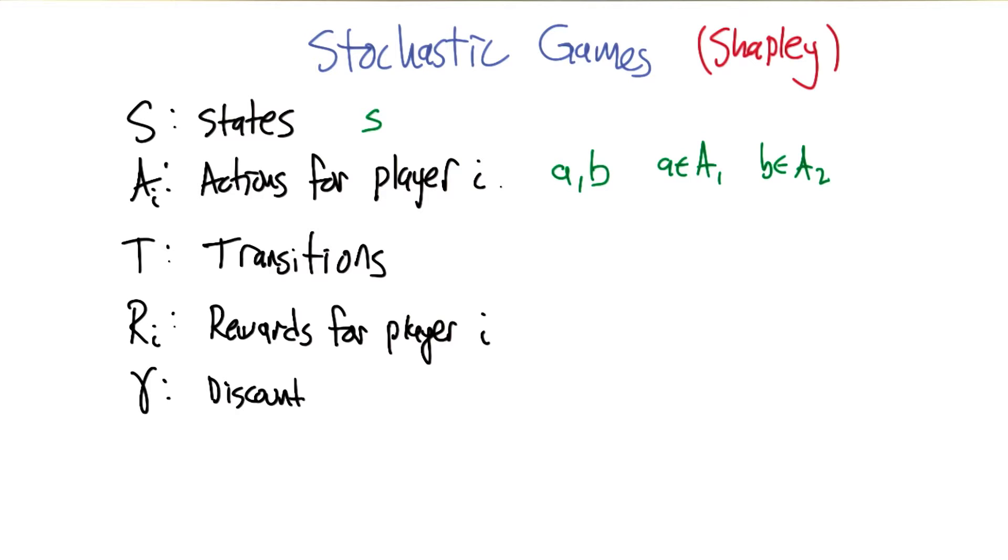So stochastic games, originally due to Shapley, have a bunch of different quantities: states, actions, transitions, rewards, and discount factors. And here's how we're going to do it.